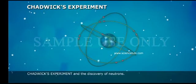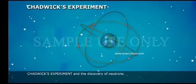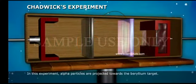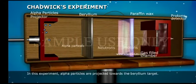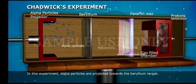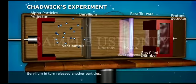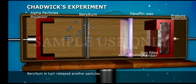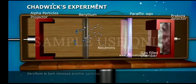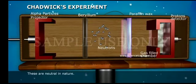Chadwick experiment and the discovery of neutrons. In this experiment, alpha particles are projected towards the beryllium target. Beryllium in turn released other particles. These are neutral in nature.